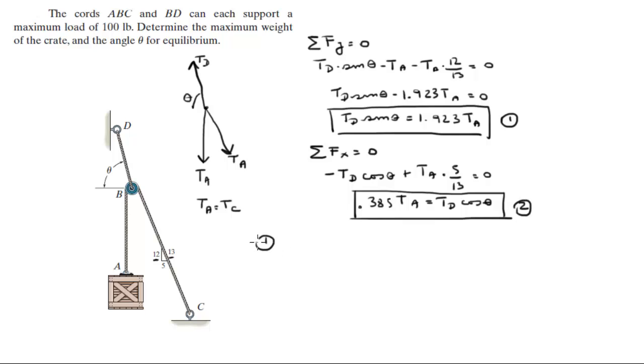Let's call this equation 2. So when you divide equation 1 by equation 2, you get tension in D, sine of theta, is equal to 1.923 tension A. And the second side is tension in D, cosine of theta, over 0.385 tension in A. So TD is cancelled out, TA is cancelled out.